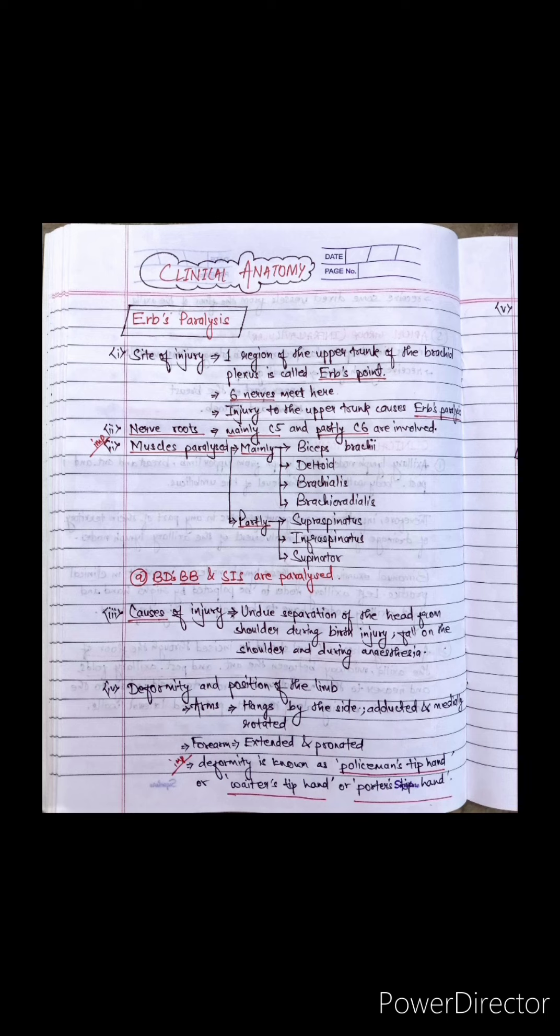The first point is Erb's paralysis. Site of injury: upper trunk of the brachial plexus, called Erb's point, where six nerves meet. Injury to the upper trunk causes Erb's paralysis. Nerve roots are mainly C5 and partly C6.